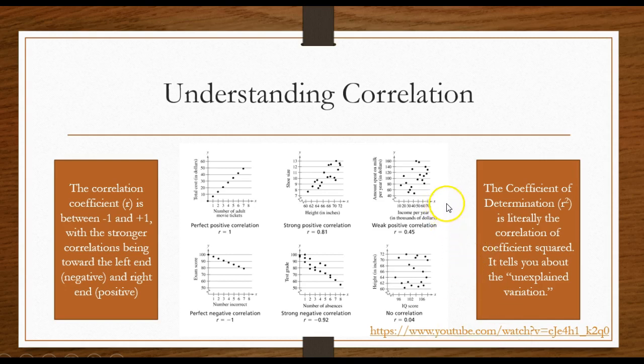Also remember that the coefficient of determination is r squared. Correlation coefficient is r, and if I square it I get the coefficient of determination r squared. It's literally the correlation coefficient squared. It tells you about the unexplained variation.